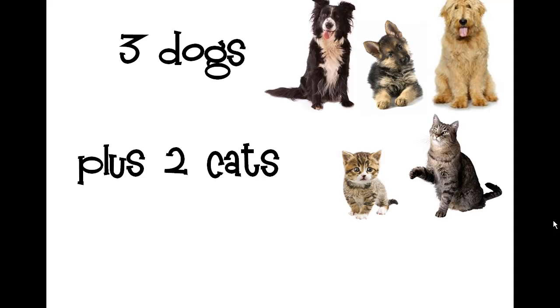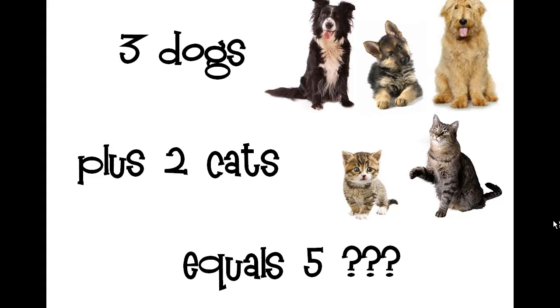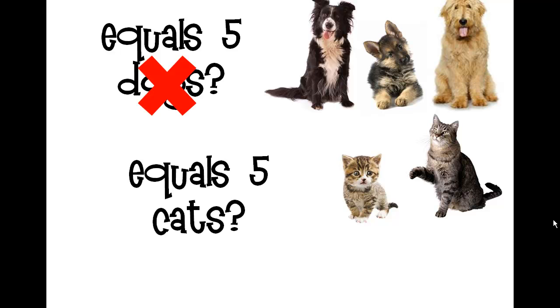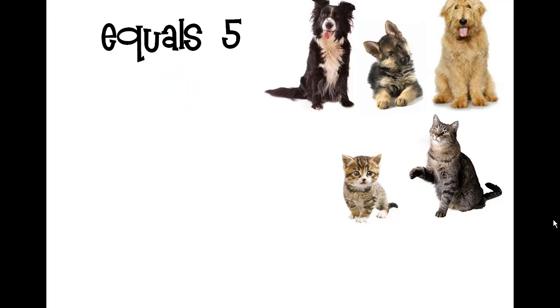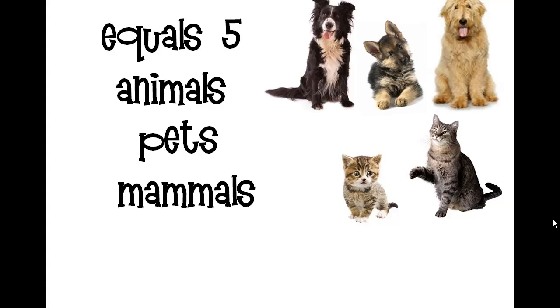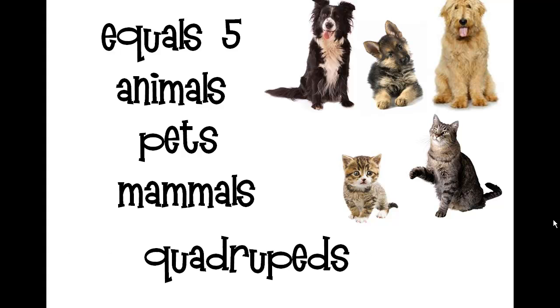Let's say you're going to add three dogs and two cats. What label would your answer have? You can't really say that you have five dogs, and you couldn't say that you have five cats. So what label do you use? Well, you could say that it equals five animals, five pets, five mammals, or even five quadrupeds.